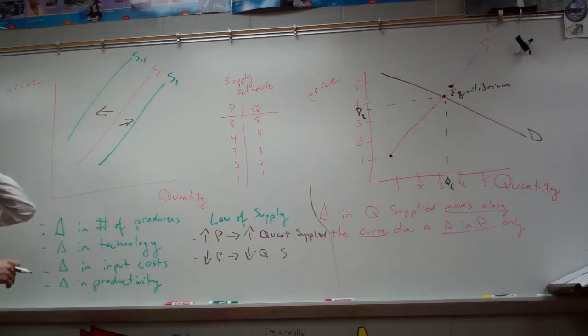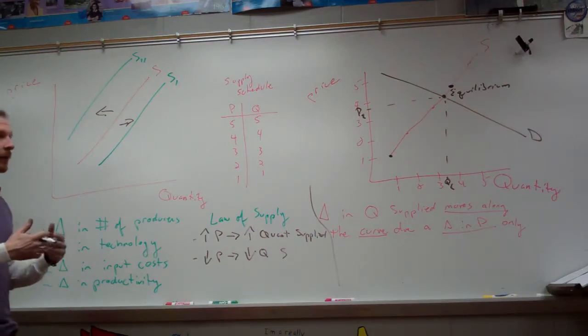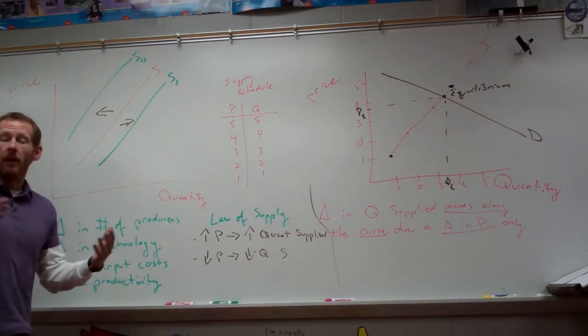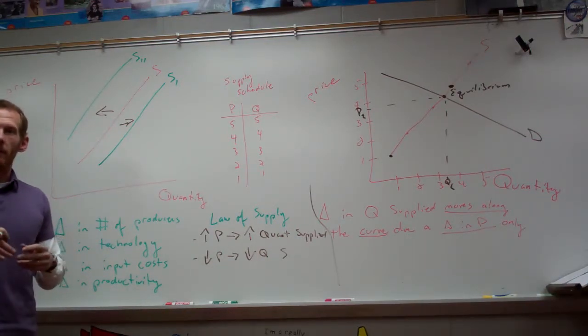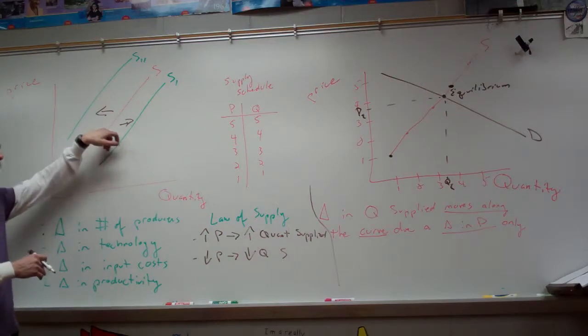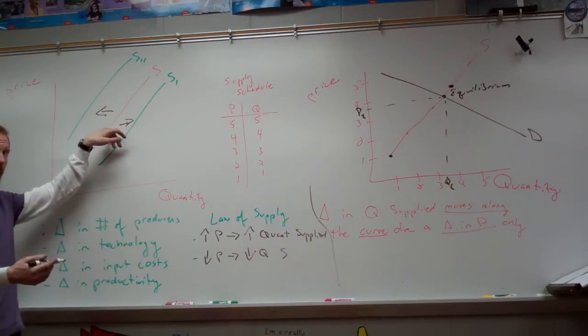More technology. Increases in technology make goods easier to make. You make them more quickly. So if we get, for instance, a bunch of computers in an area that didn't have technology before, we can be more productive. The graph would move in which direction? S sub 1.